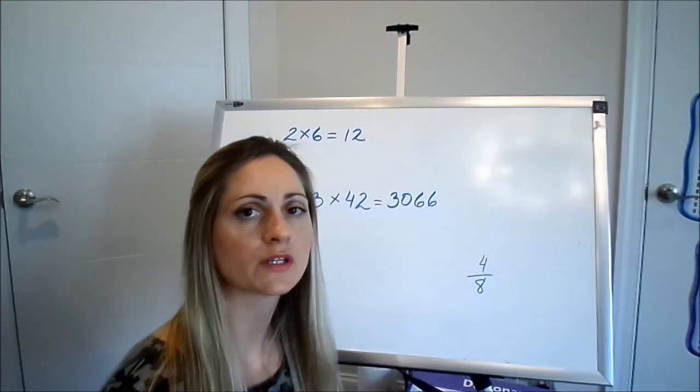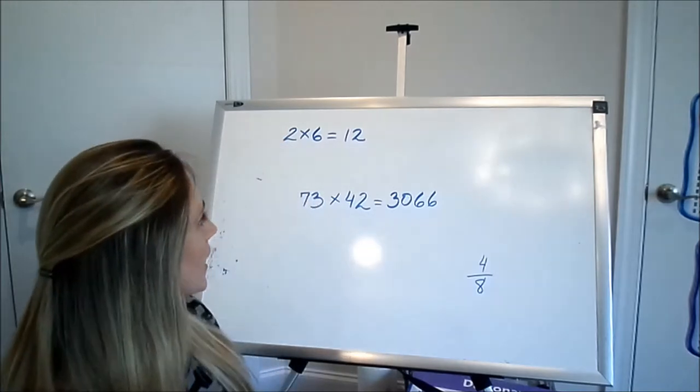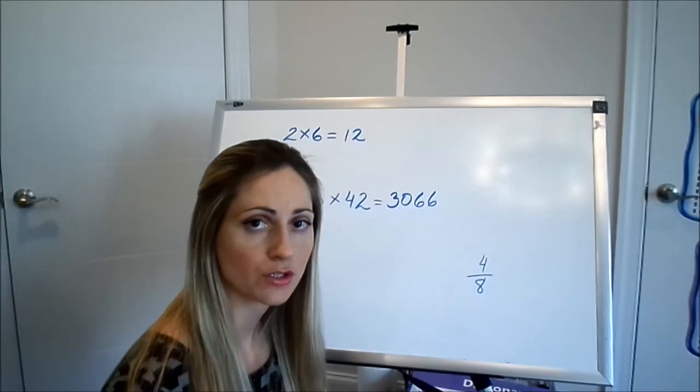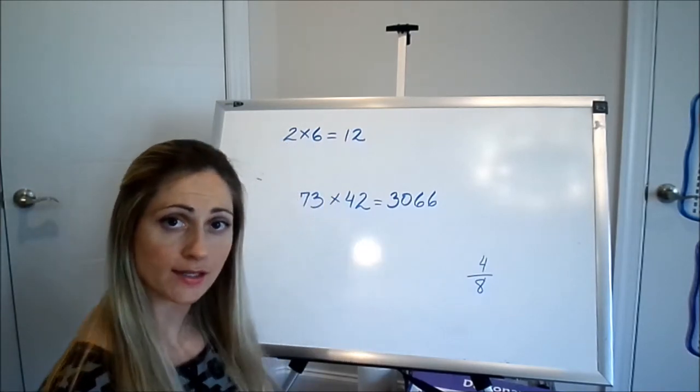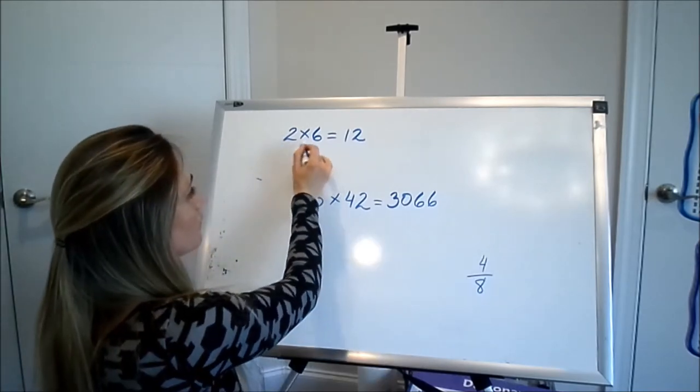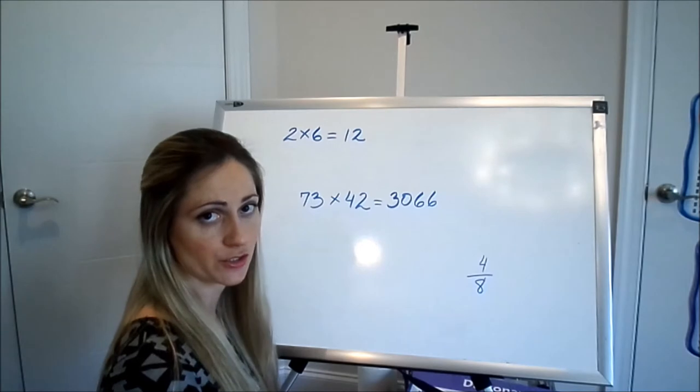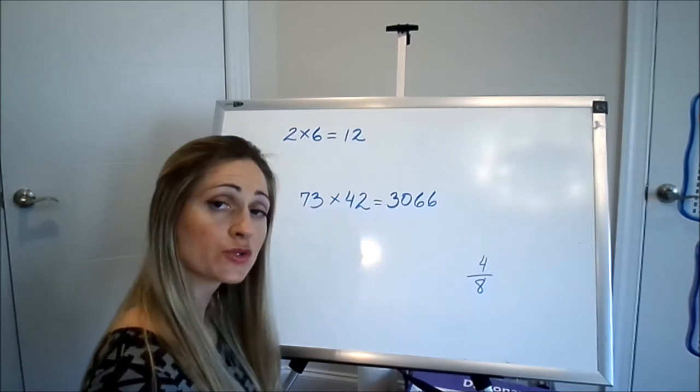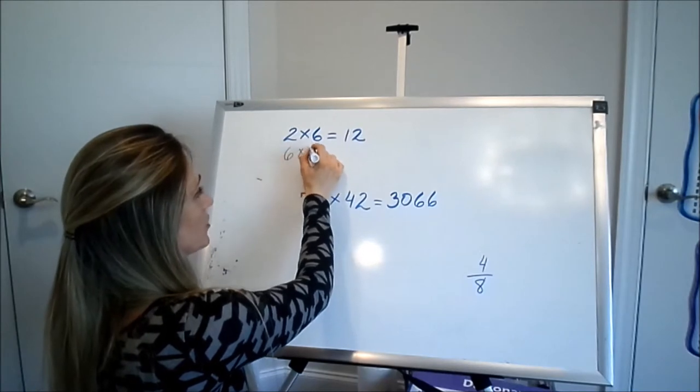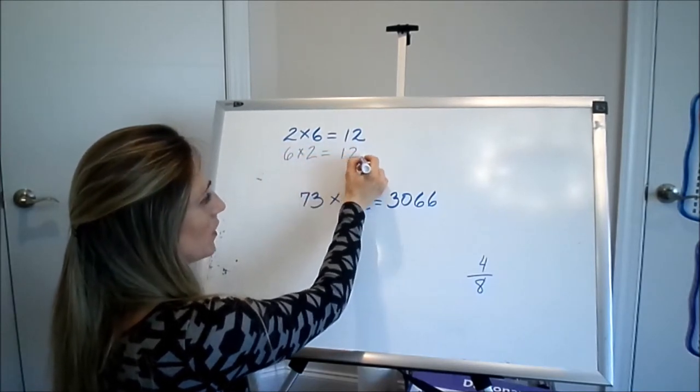2 times 6 equals 12. Is it true that 6 times 2 should also equal 12? Yes, that is absolutely true. We know that if we flip factors, they become their twins and we get the same product. 6 times 2 also equals 12.